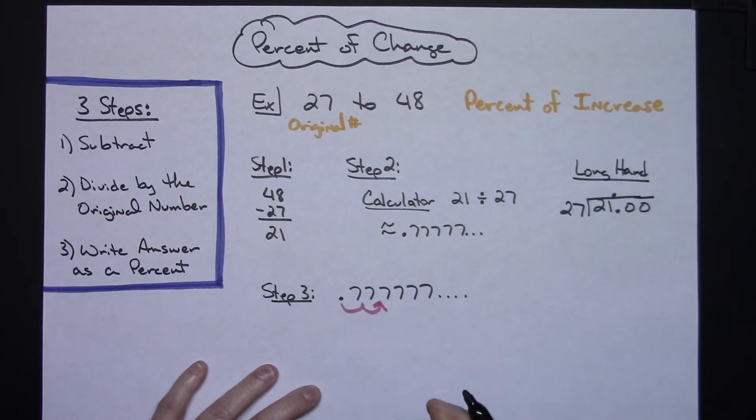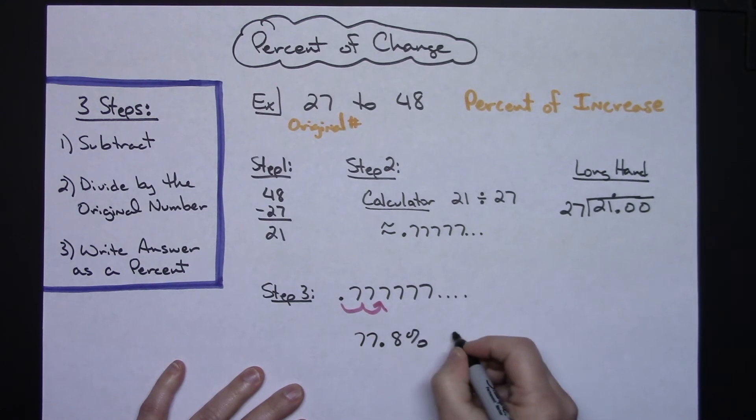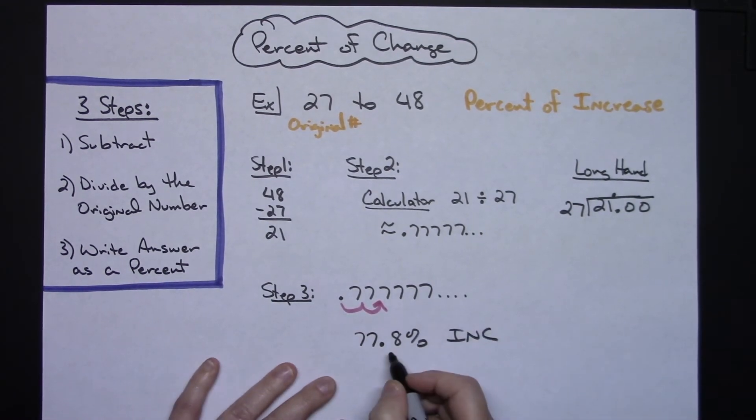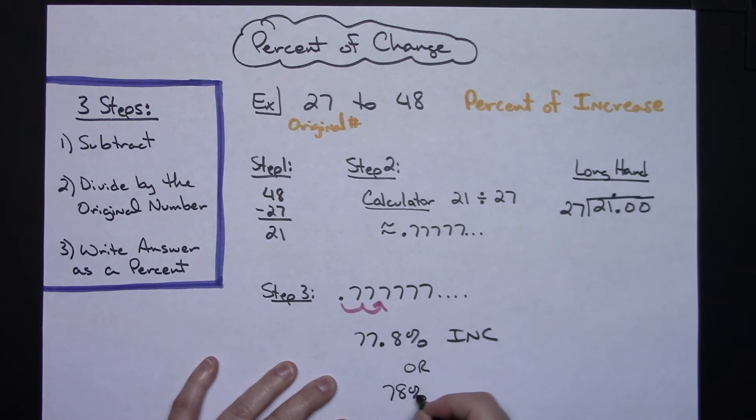And then hopefully your textbook is going to tell you round to the nearest tenth, round to the nearest whole percent. It's going to indicate something. If I write it to the nearest tenth, I would have a 77.8% increase. If my book said to round to the nearest whole percent, this eight or even the seven would make that turn up to be a 78% increase.